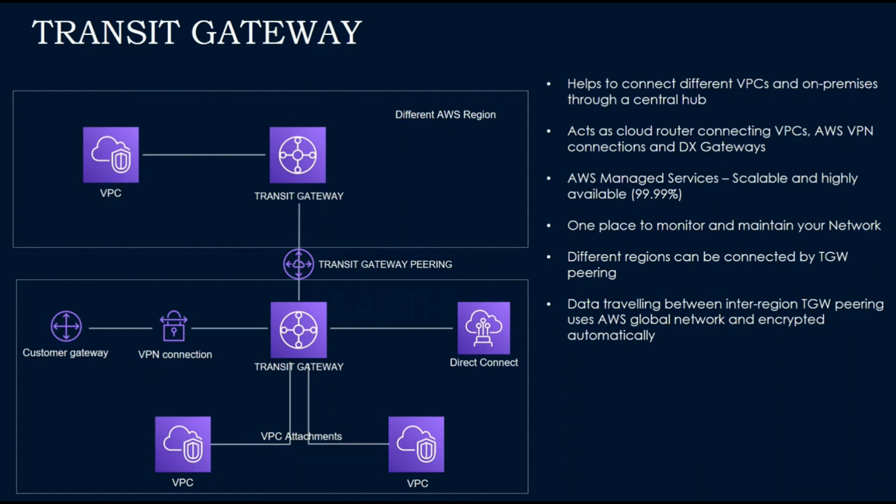If you have two Transit Gateways in two different regions, they can be connected via Transit Gateway peering. The data traveling between the Transit Gateway peering uses the AWS global network, so it is highly secured because it is encrypted automatically rather than going over the public network.